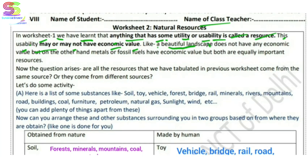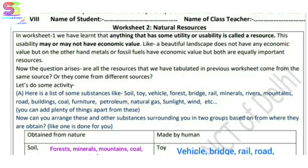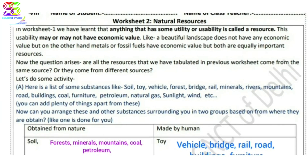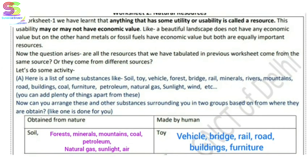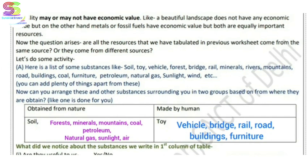For example, a beautiful landscape does not have any economic value, but on the other hand, materials or fossil fuels have economic value. However, both are of equal importance as resources — because if we look at scenery or greenery, it is good for us and therefore also valuable.